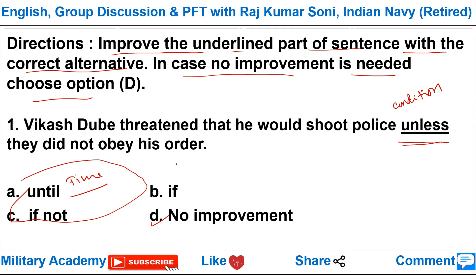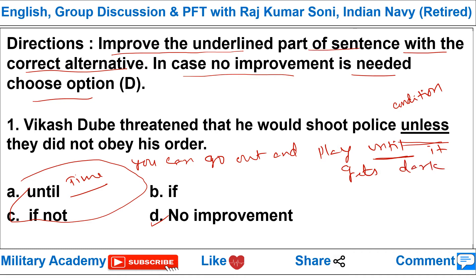'Until' refers to time, and 'unless' refers to condition. In the sentence 'Dubai threatened that he would shoot police unless they did not obey his order', 'unless' is not making correct sense here. The correct word is 'if' — 'he would shoot police if they did not obey his order.' So option B, 'if', is the correct option.